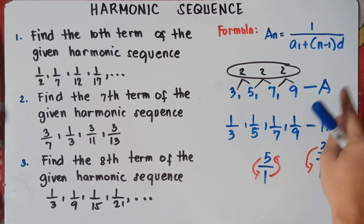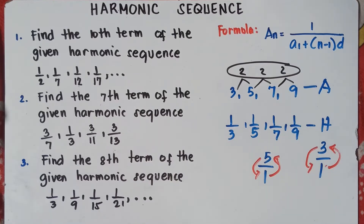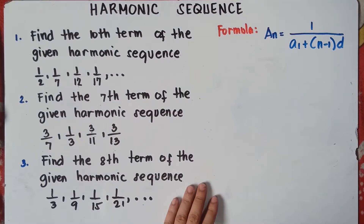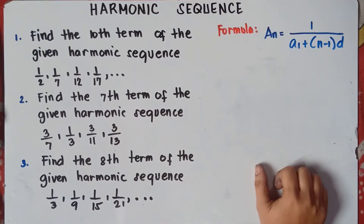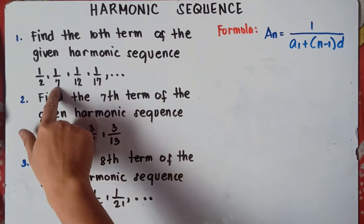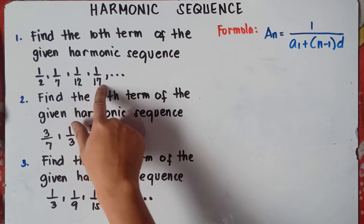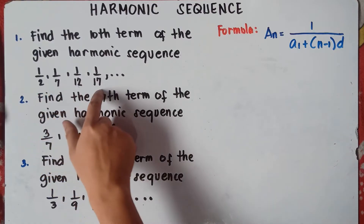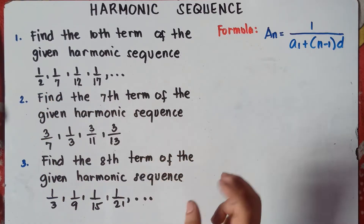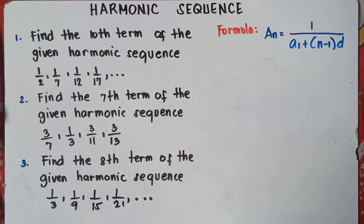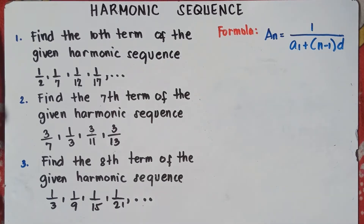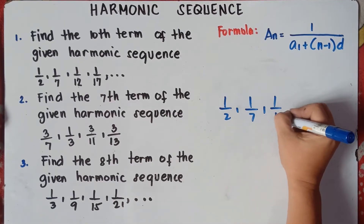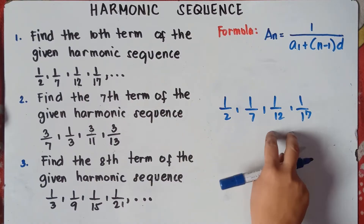So the harmonic sequence is the reciprocal of the arithmetic sequence. Let's try to answer number 1: find the 10th term of the given harmonic sequence. We have 1 half, 1 over 7, 1 over 12, and 1 over 17. For you to answer this harmonic sequence, we need to convert this harmonic sequence into arithmetic sequence so that we can find the common difference easily.